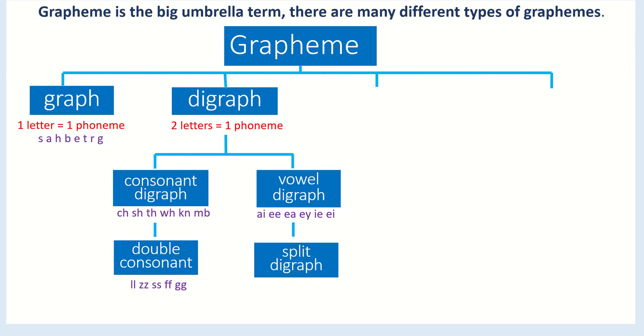We can also have what's called a split digraph, and you'll see these at the end of a lot of words. A split digraph is where you have a vowel and an e, and they're split by a consonant in between. I'll give you an example.